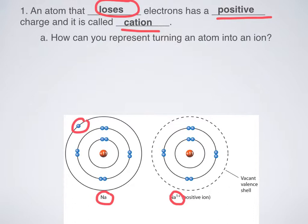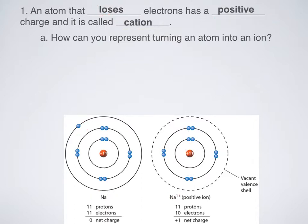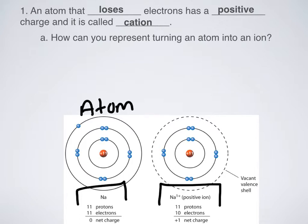I have 11 positively charged things in the center, but if I count the electrons I only have 10. So the math makes this work out — if I have an equal number of positive and negative things, I have no net charge, and that is the definition of an atom. If instead I have either gained or lost electrons, I now have an ion. In this case I have lost an electron so I am positive — I am a cation. So how can I represent this process of turning an atom into an ion? There is notation that's used.